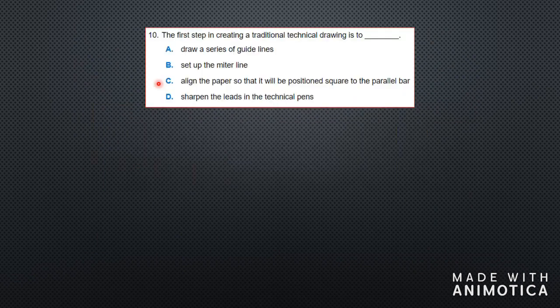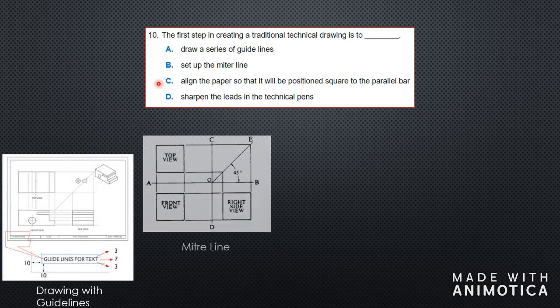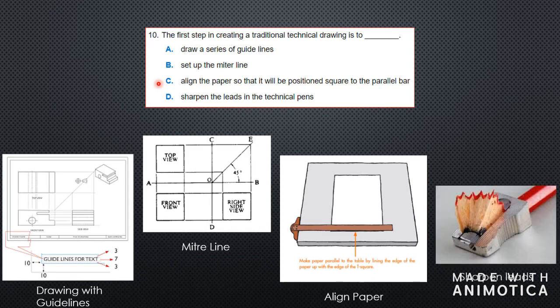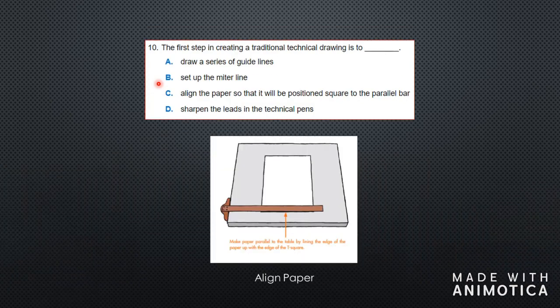Question ten: the first step in creating a traditional drawing is to do what? The first step would not be to draw a series of guidelines or set up a meter line, because you need the paper before you can draw anything. You need to eliminate answers that don't make sense for the first step. So the first thing you want to do is line up or align your paper so that it is positioned square to the parallel bar — then you can prepare and draw everything else.